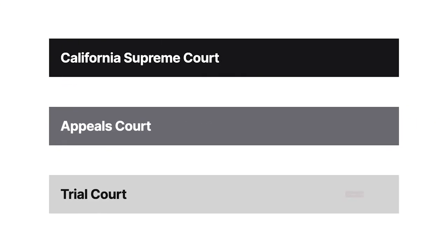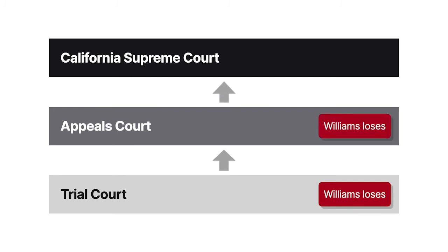The jury found Williams guilty of unlawful sexual intercourse with a minor. On appeal, Williams argued that the court had dismissed that juror incorrectly, because the juror was exercising the right to jury nullification. The Court of Appeals affirmed the conviction, and Williams appealed to the California Supreme Court.